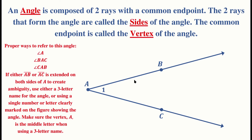Ray AB and ray AC are called the sides of the angle, and the common endpoint A is called the vertex of the angle. There are different correct ways to name this angle. If there is no extension on both sides of A and therefore no ambiguity, you can just call it angle A. Another correct way would be to call it angle BAC or angle CAB. When using three letters to name an angle, always make sure the vertex is the middle letter. You can also place a number or letter inside the angle and call it angle 1.